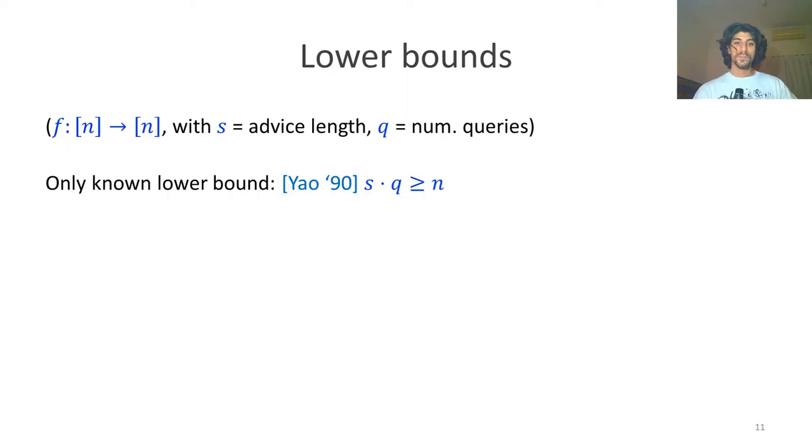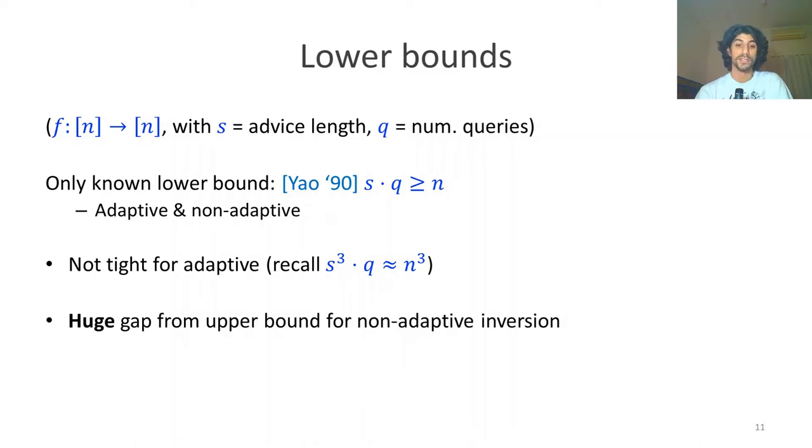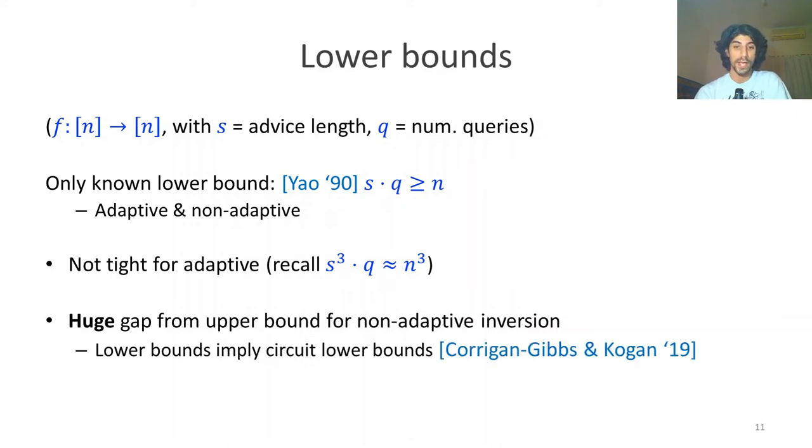For lower bounds, we have a single interesting bound: Yao's bound. This bound is actually tight for adaptive permutation inversion. This bound applies to both adaptive and non-adaptive inversion. In the adaptive case, there's still a gap between the best upper bound for functions, not permutations. But for the non-adaptive case, there is a huge gap. We believe this gap exists because any new lower bounds which improve on Yao's bound actually imply new circuit lower bounds, which are groundbreaking.